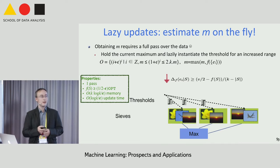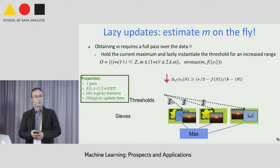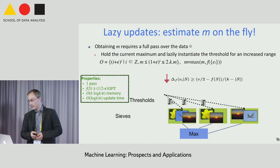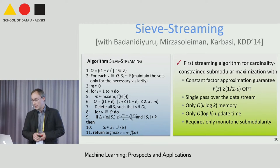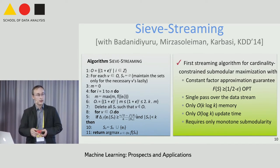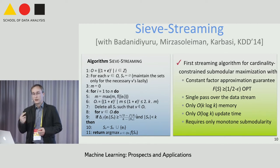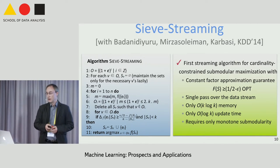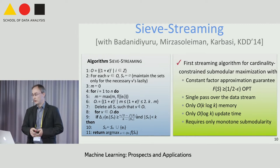This is a really simple algorithm, very easy to implement, and ticks all the boxes for a streaming setting. In summary, this is the first streaming algorithm for cardinality-constrained submodular maximization that gives a 1/2 − epsilon approximation, requires a single pass of the data, uses O(k log k) memory, has O(log k) update time, and requires only monotone submodularity.